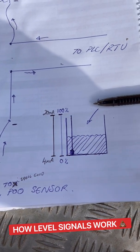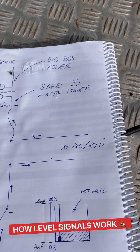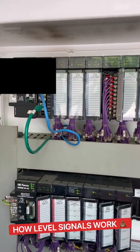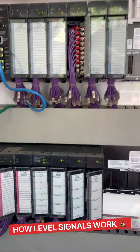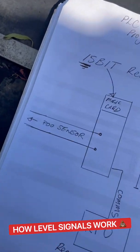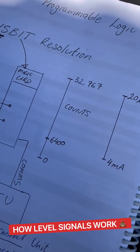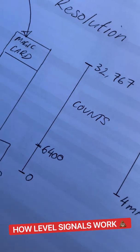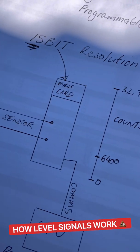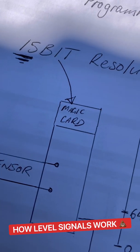Our sensor will deliver 4 to 20 milliamps from 0 to 100% of our wet well value. So where does that signal go? This is a PLC — it stands for a Programmable Logic Controller. Here is where we insert the signal from our sensor. The PLC then magically converts the sensor signal into a binary unit called counts.